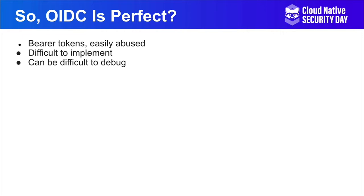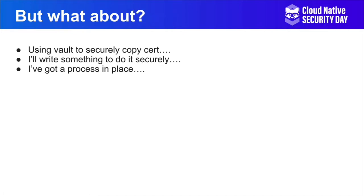So OIDC isn't perfect. Bearer tokens are easily abused — there's a history of leakage vulnerabilities, one just came out with VMware. So it's really important to have those short-lived tokens. It can be difficult to implement with a lot of different steps and different projects involved. With certificates it's a direct connection, so that can make OIDC harder to implement and harder to debug. But what about using Vault, short-lived certs, and other schemes? Ultimately, you're re-implementing OpenID Connect's refresh process without the thousands of hours of peer review that OpenID Connect has gotten. Unless you work at one of the larger cloud vendors, you're not going to have enough eyes on whatever you develop to equal the time that's been put into OpenID Connect.